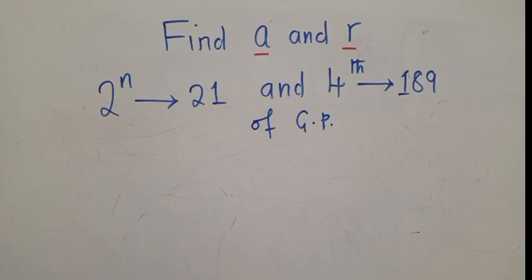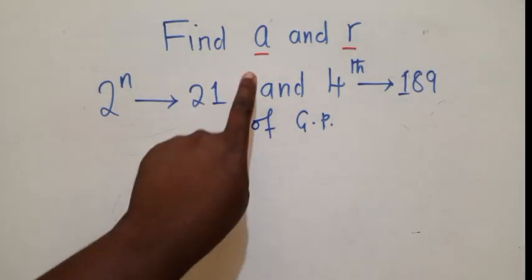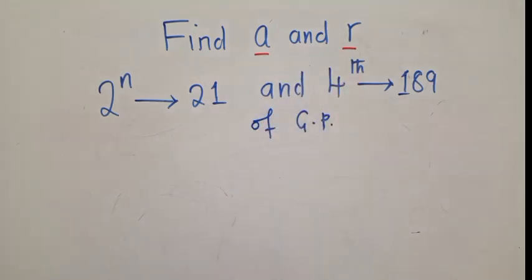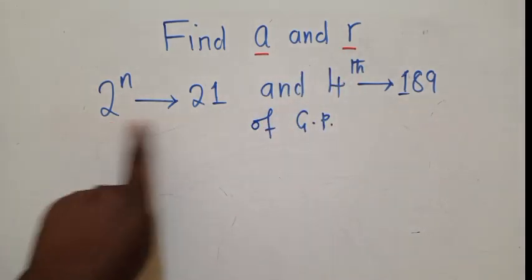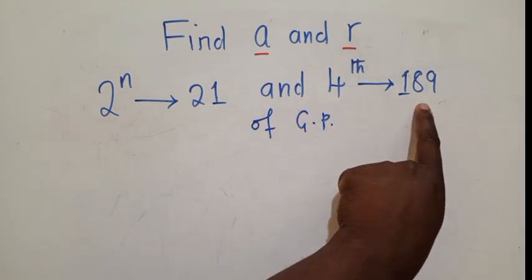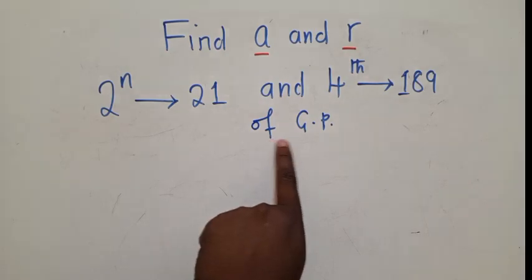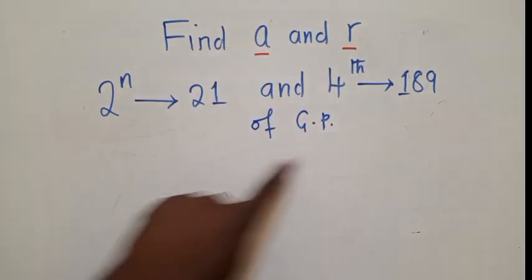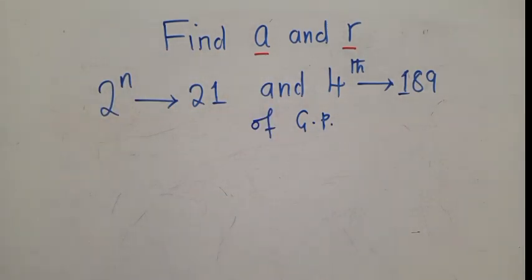I hope you're doing fine this morning. I've got this question where we need to find the first term and the common ratio. We've been given the second term, which is 21, and the fourth term, which is 189. They've also said this is geometric progression. So the progression that you're dealing with is a geometric progression.